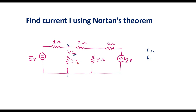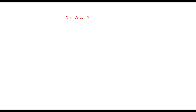To find Norton's resistance, we have to find the equivalent resistance between terminal A and B, keeping A and B open. We are supposed to remove the 5 ohm resistor from the circuit; then terminals A and B will be open. We have to short circuit all voltage sources and open circuit all current sources, and find the equivalent resistance between terminals A and B.